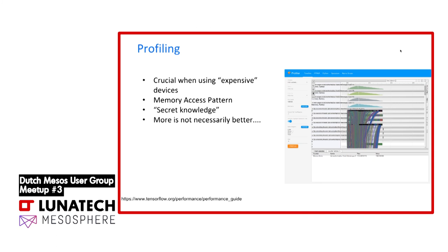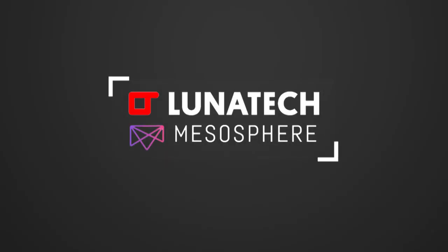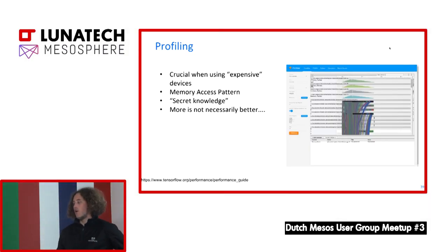Similar with profiling — profiling is probably one of the most critical things, especially if you're using expensive resources like GPUs or TPUs on Google Cloud. You really need to make sure you're actually utilizing them, because most often you'll waste a lot of resources due to memory transfer or other things. For example, powers of 16 are really good for NVIDIA GPUs — if you structure all your matrices to be multiples of 16, it's going to run much faster.